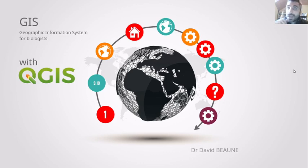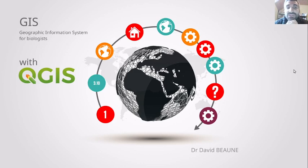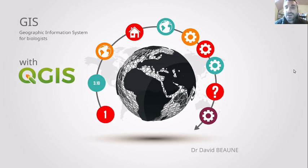QGIS is a software; GIS is a domain. It's like doing statistics — if you want to do statistics, you are going to use R as a software. So GIS is a domain, and we are going to use QGIS, which is the software. QGIS is like R: doing statistics is to R as doing GIS is to QGIS.